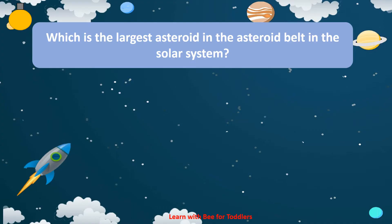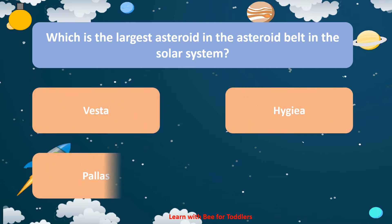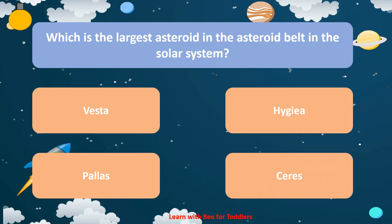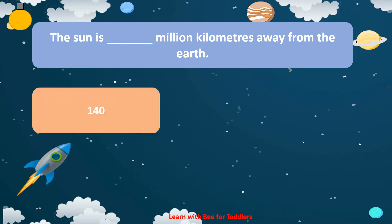Which is the largest asteroid in the asteroid belt in the solar system? Vesta. Hygieia. Pallas. Ceres. Ceres. The Sun is million kilometers away from the Earth. 140.